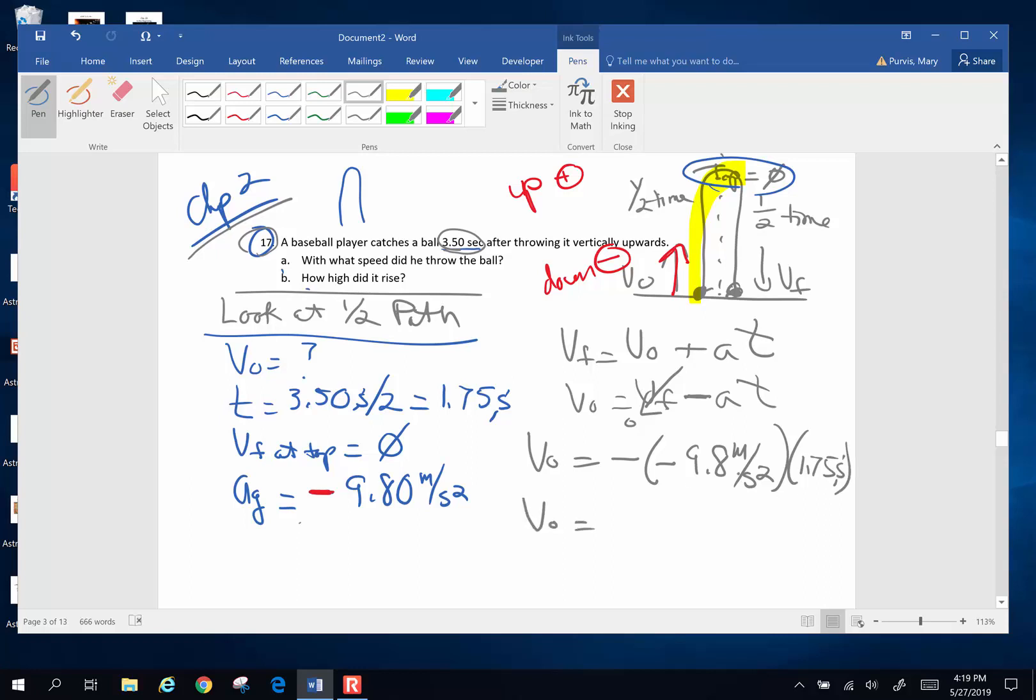So original velocity minus final, well final at the top is zero. That's going to go to zero. Acceleration is going to be negative 9.8 meters per second squared. And the time is 1.75 seconds. So when I do the math, 9.8 times 1.75, I end up with an original velocity of 17.2 meters per second. This is a negative times another negative, those are both positive. The original velocity was up. We defined that as positive, so that works.